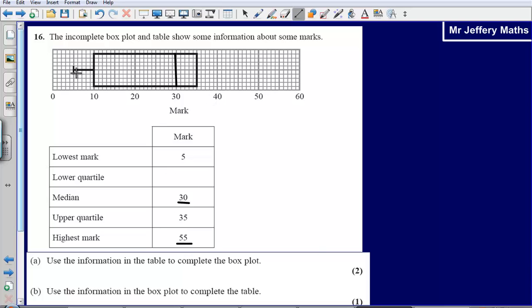Then the highest mark is represented like the lowest mark is, using a line that comes out of our box plot. And so we can see that our highest mark is 55 so we need our line to come up to 55. And so that would finish our diagram. So that was worth two marks.